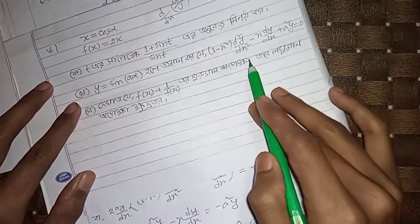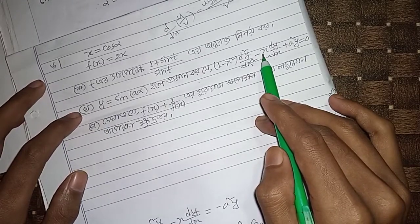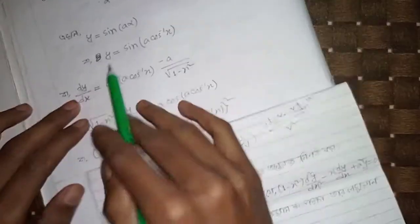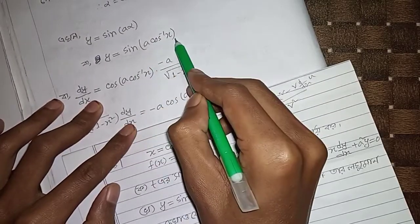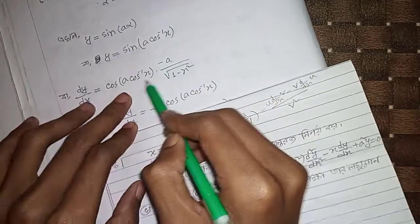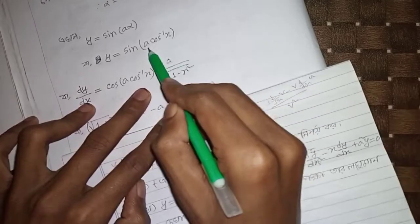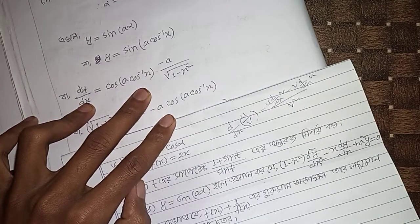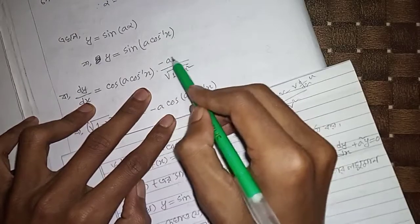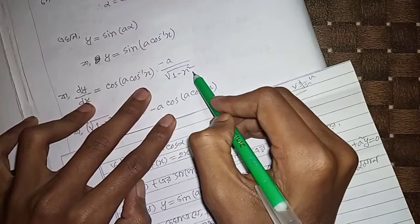For d²y/dx², we first find dy/dx. The derivative of sin(a·cos⁻¹(x)) involves the chain rule. Since d/dx(cos⁻¹(x)) equals minus one by root(1-x²), we get dy/dx equals minus a by root(1-x²).